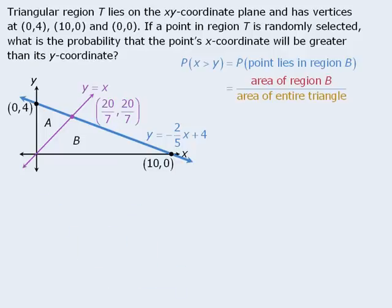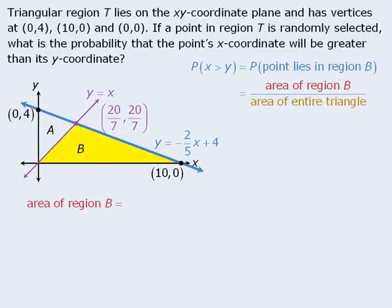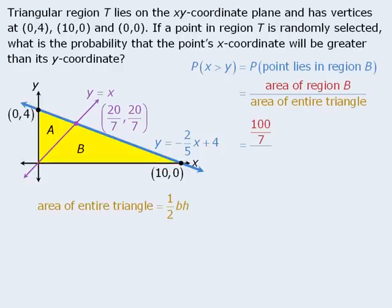At this point, we can find the areas of the two required triangles. The area of region B is equal to one half base times height, where the base is 10 and the height is 20 over 7. When we plug these values into the formula, we get an area of 100 over 7. Now to calculate the area of the entire triangle, the base is 10 and the height is 4. When we plug these values into our formula, we get an area of 20.